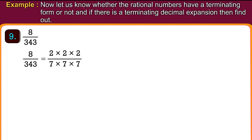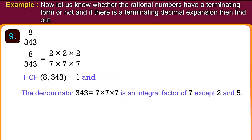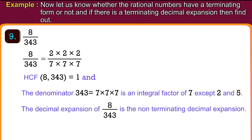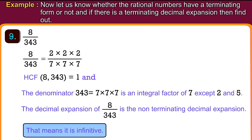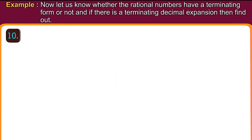Number 9: 8 upon 343. 8 upon 343 equals 2 into 2 into 2 upon 7 into 7 into 7. The highest common factor of 8 and 343 is 1. The denominator 343 equals 7 cubed, which has a prime factor of 7 other than 2 and 5. Therefore, the decimal expansion of 8 upon 343 is the non-terminating decimal expansion, meaning it is infinite.